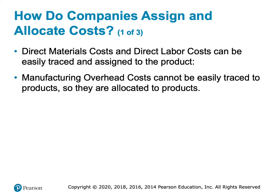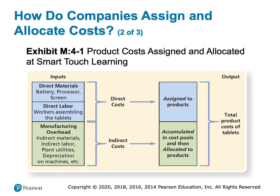Activity-based costing comes in and says, let's allocate this overhead in a better way. Direct materials are assigned to products, but all of those indirect materials are allocated — we're estimating how much they're using. Estimates are inherently wrong; we know that. Activity-based costing is just a way to make a better estimate of how much overhead a product is using. It's still an estimate, but it's a better one than what we've been using before.